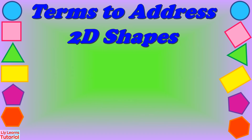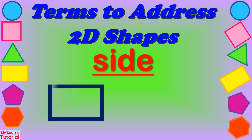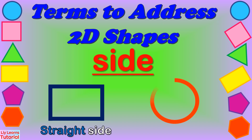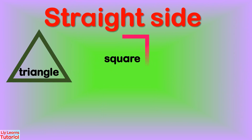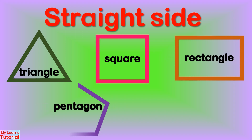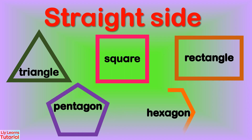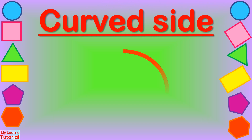Before we move forward, let's take a look at the terms used to describe 2D shapes. The first term is sides. Sides could be straight or curved. Straight sides are like the sides of a triangle, square, rectangle, pentagon, and hexagon. Curved sides are like the side of a circle.